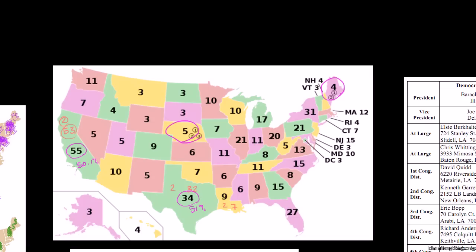In general, the president is whoever gets the majority of the electoral votes in the United States. Right now that threshold — that magic number — is 270 electoral college votes.